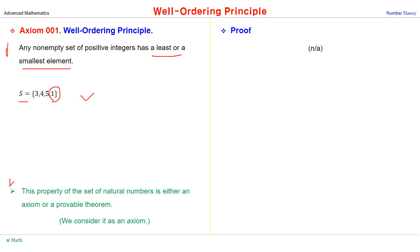This property of the set of natural numbers is either an axiom or a provable theorem. We consider it as an axiom, so there is no need to provide a proof.